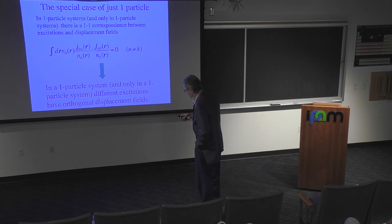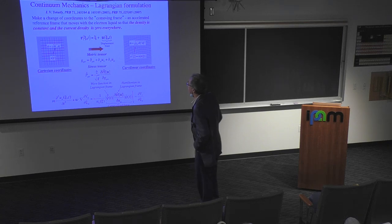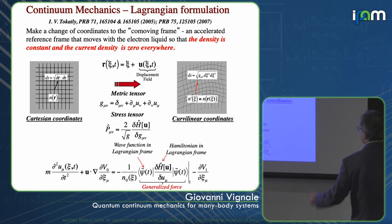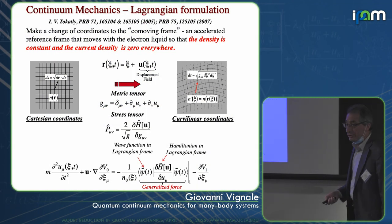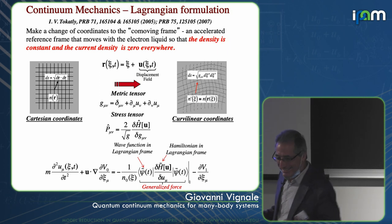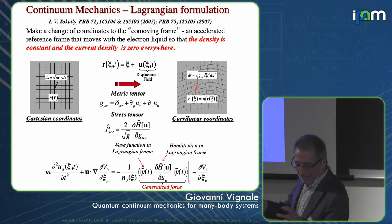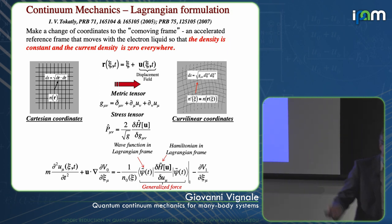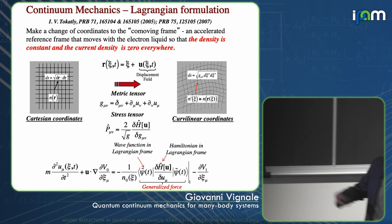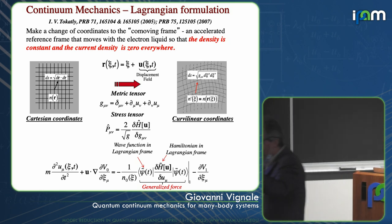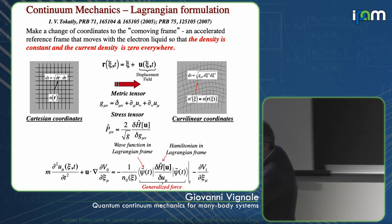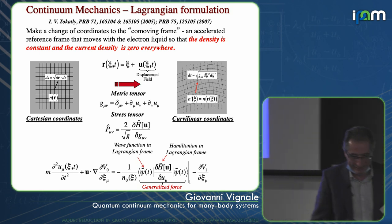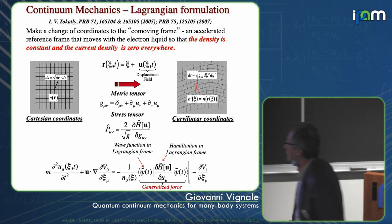How do we derive the equation of motion? It's a very difficult problem because we are relying on the Runge-Gross theorem and we don't have any explicit forms for that functional.